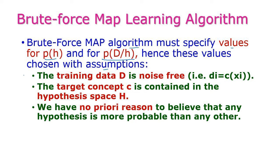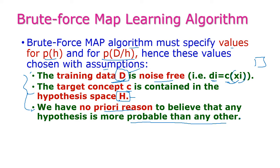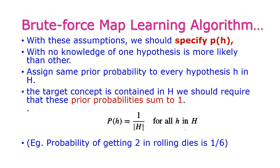This algorithm uses the following assumptions. First, the training data D should be noise-free, meaning D_i = C(X_i) — X_i is a candidate from the entire population assigned to training data D_i. Second, the target concept C is contained in the hypothesis space H, because all candidates should be inside the hypothesis space. Third, we have no prior reason to believe any hypothesis is more probable than any other — we treat all hypotheses equally.